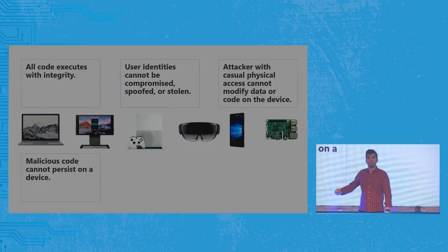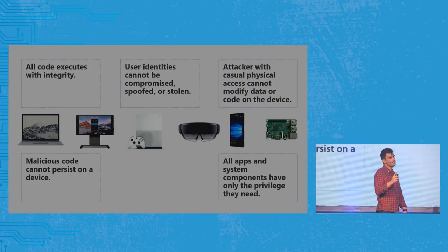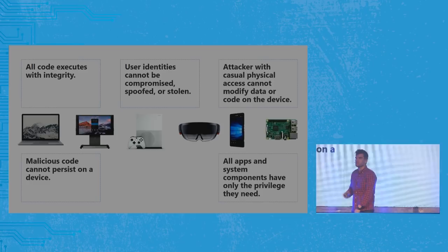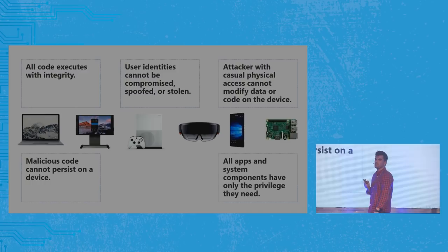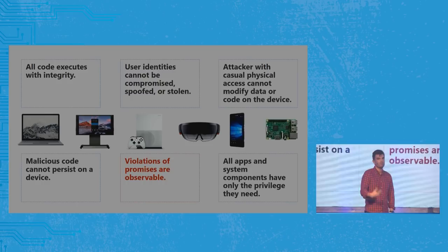The fifth promise: apps and system services run in least privilege, so a compromise of a particular service should only compromise what that service actually needed access to. And the final — arguably the most important — is we'd like to be able to attest to the health and enforcement of all five of those properties. This is obviously a tall order, but I wanted to share with this room where we think we're going.